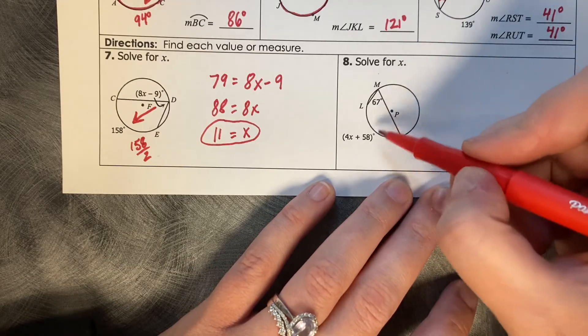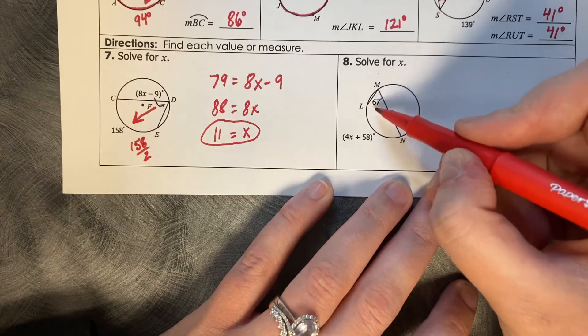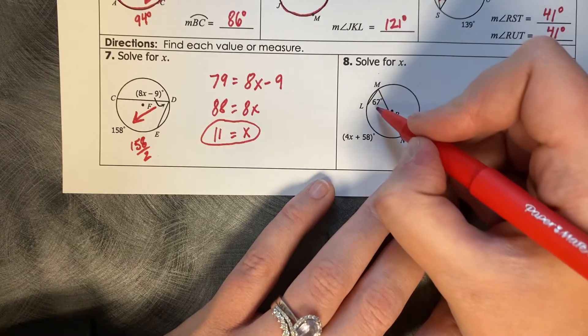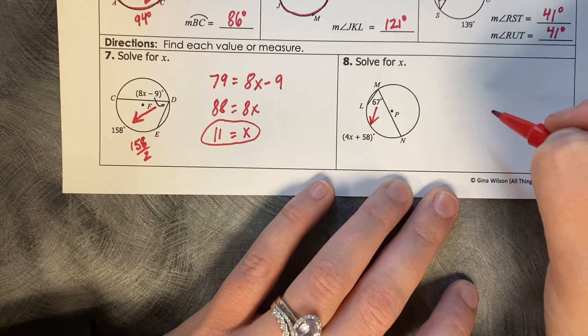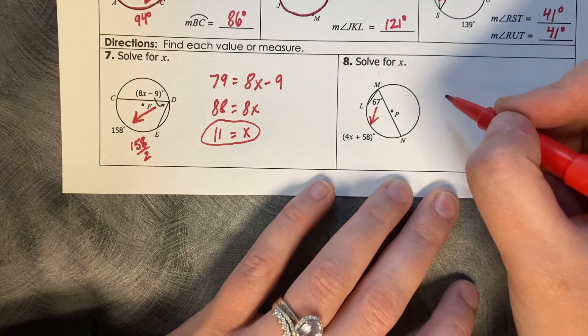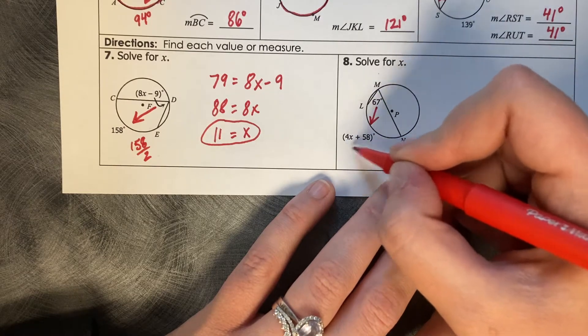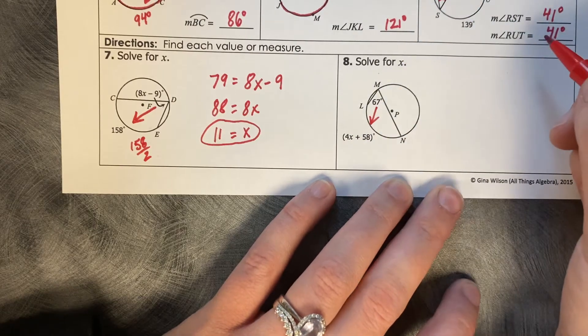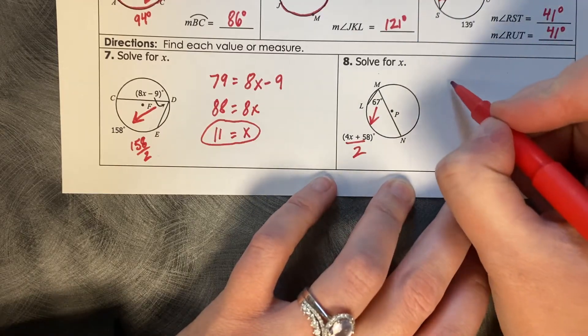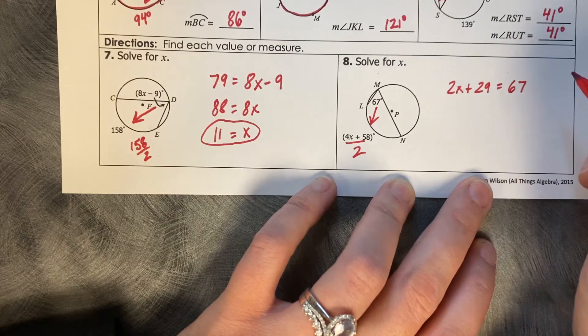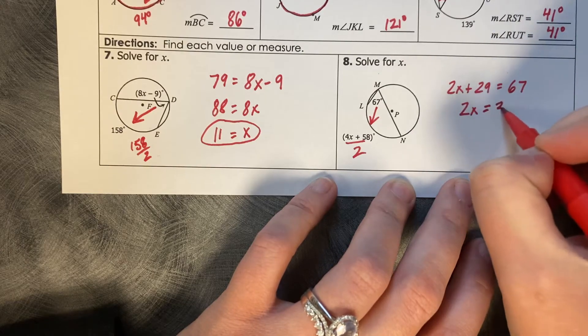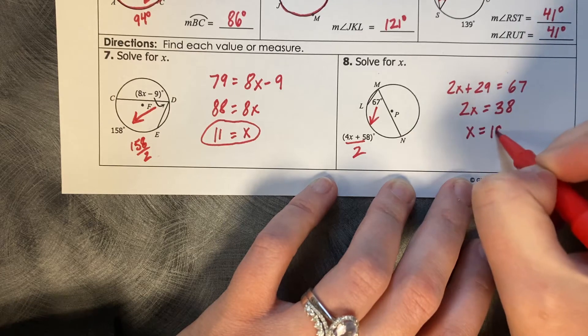Okay, so this one has reverse expressions. This one's got just a regular degree measure, and this one's got an expression. So remember that when you're going from your inside angle out to your arc, you would multiply by 2. So you could do 67 times 2, or you could divide each of these expressions in half. I'm just going to show it by dividing by 2. So we've got 2X plus 29 equals 67, minus 29, 2X equals 38, and X divided by 2, X equals 19.